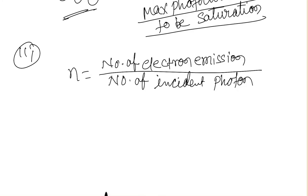In the question it is clearly mentioned that the power of the incident beam is W1 in the first case and W2 in the second case, and the quantum yield is η1 and η2 respectively. So the power of the incident photons responsible for the photoelectric effect is equal to η1·W1 in the first case and η2·W2 in the second case.